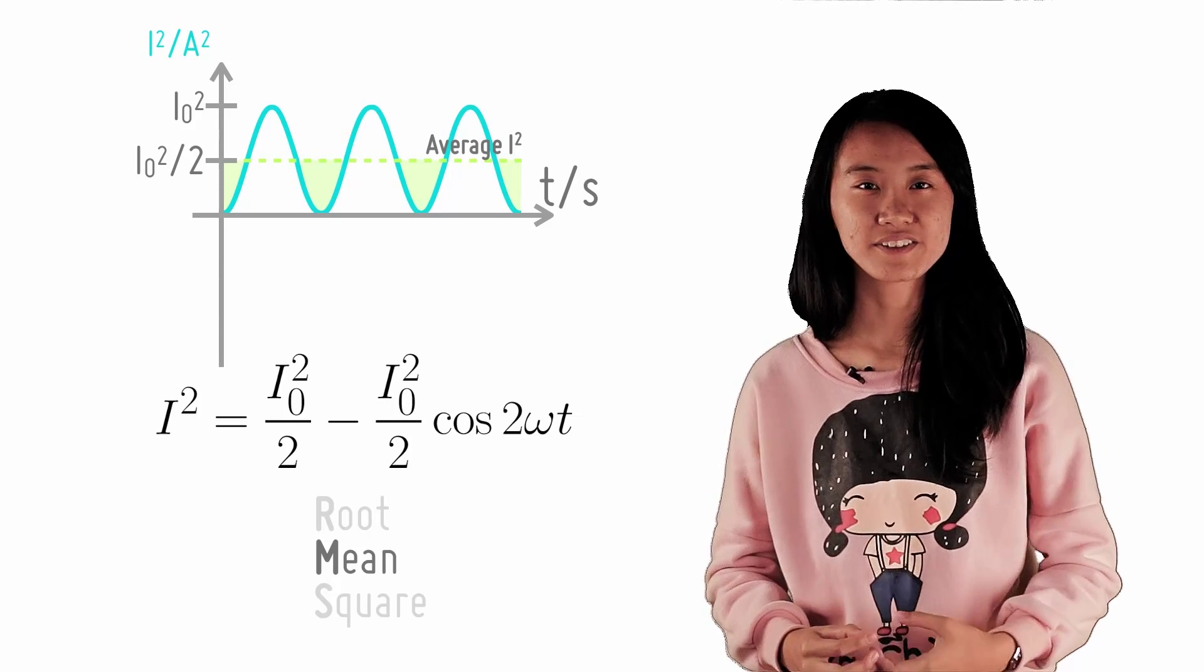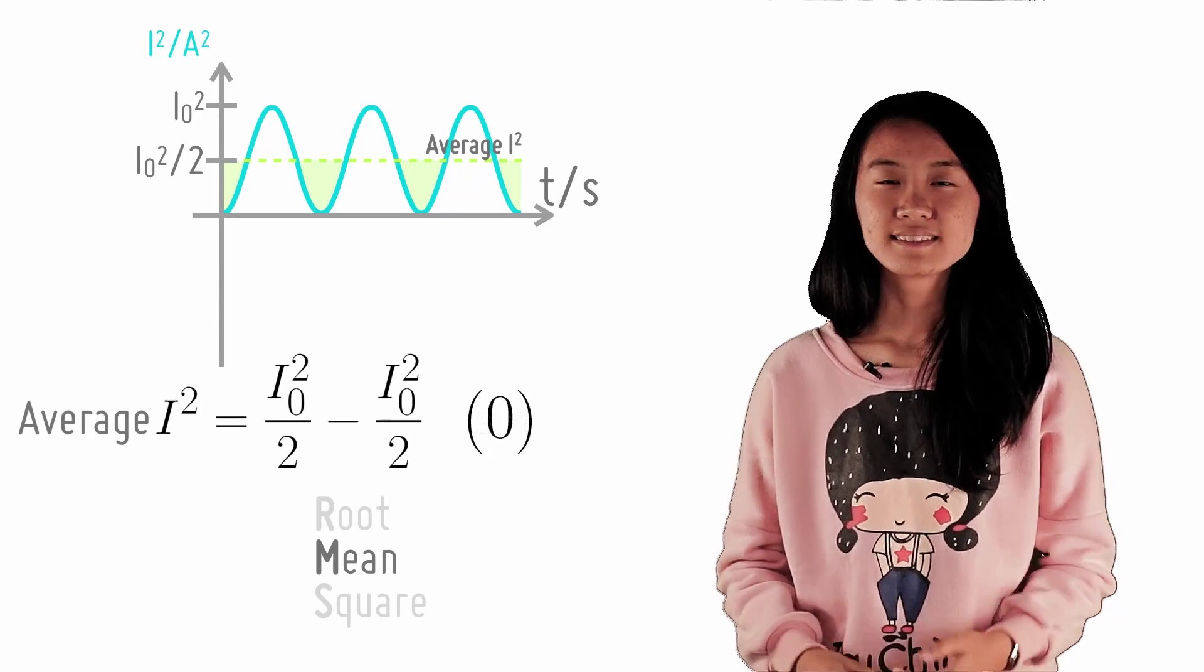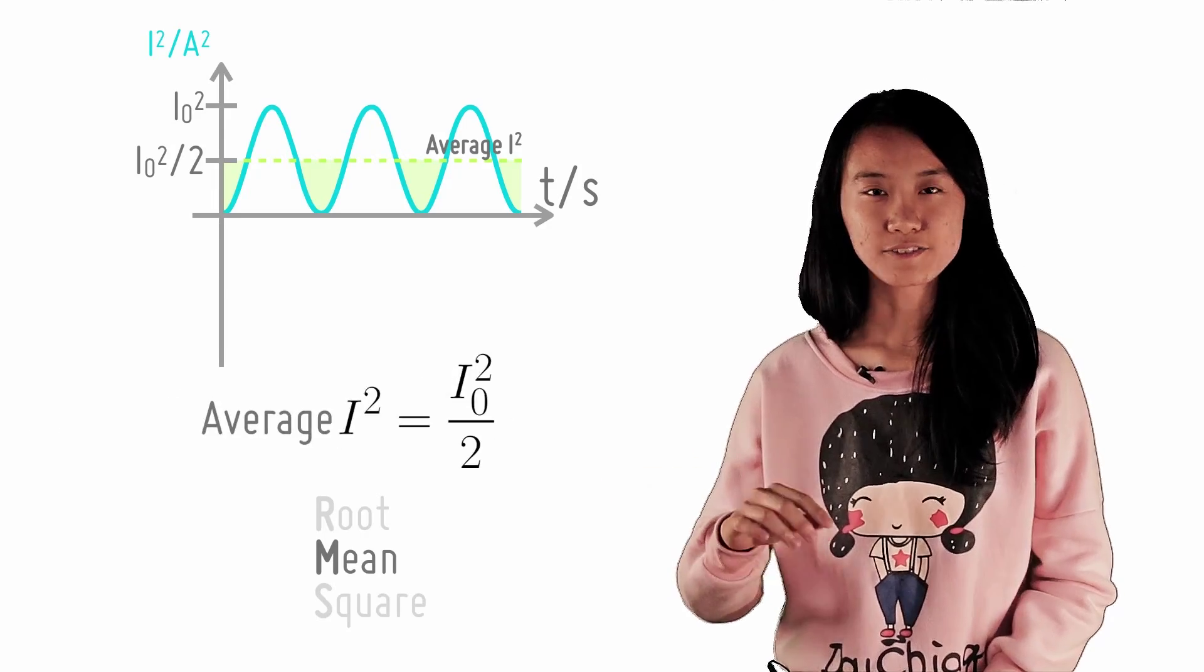Algebraically, we can also note the average value of a sinusoidal graph over time is 0. Hence, this cosine term averages to 0 and the average I² is again I₀²/2.